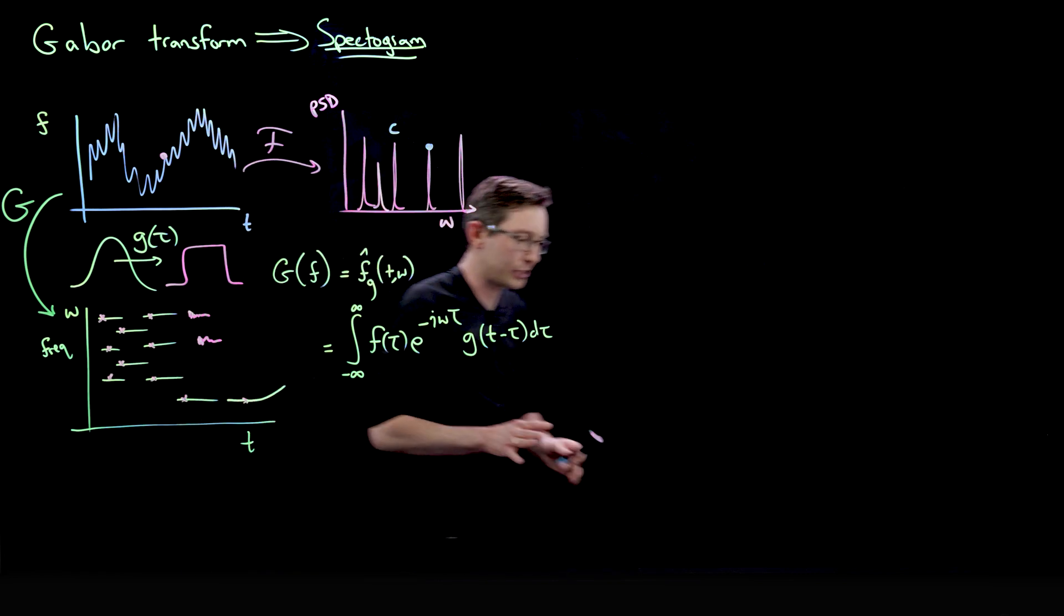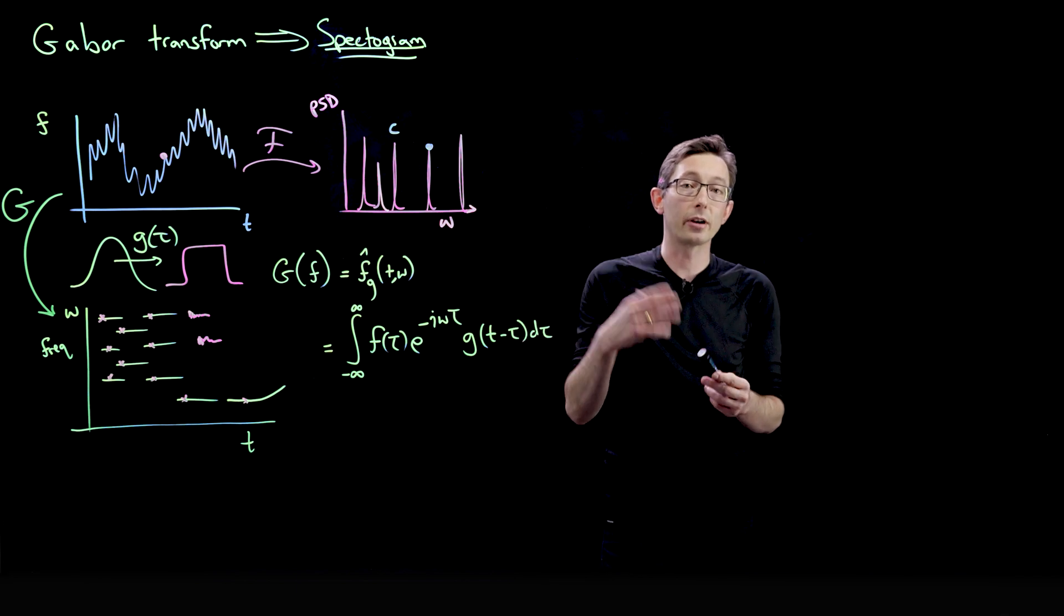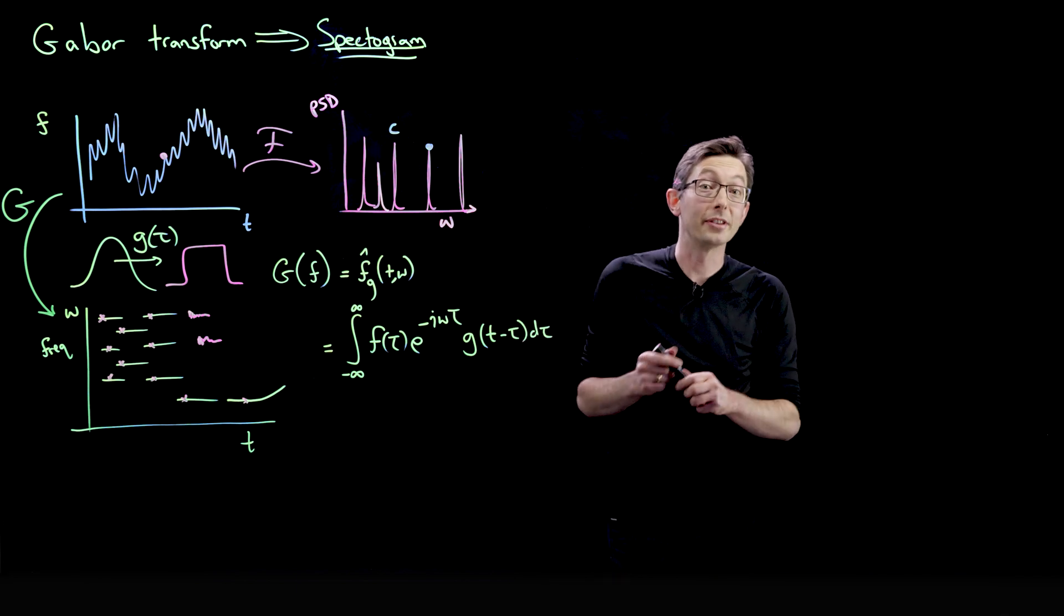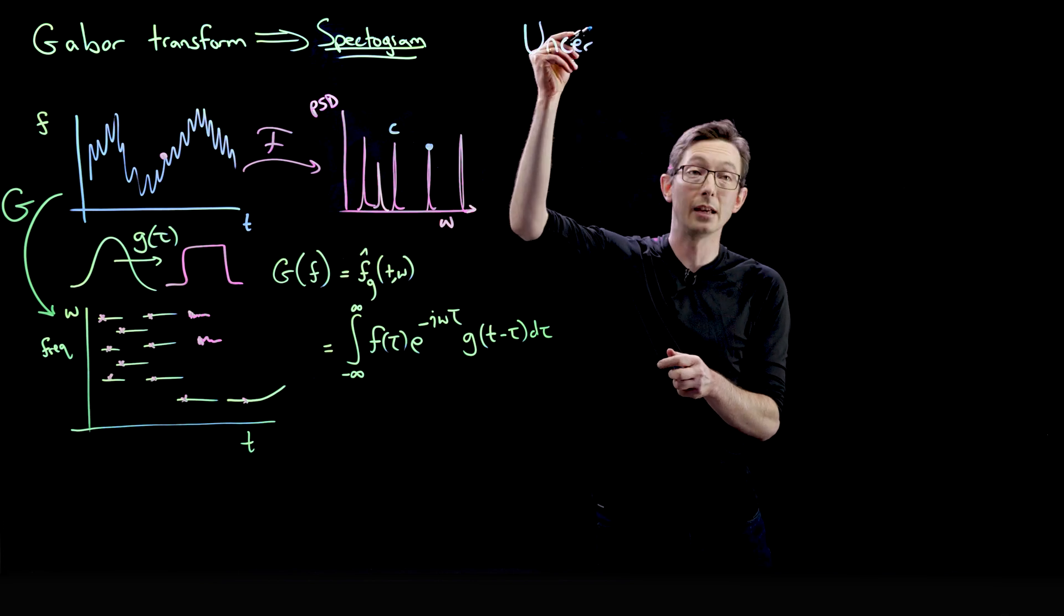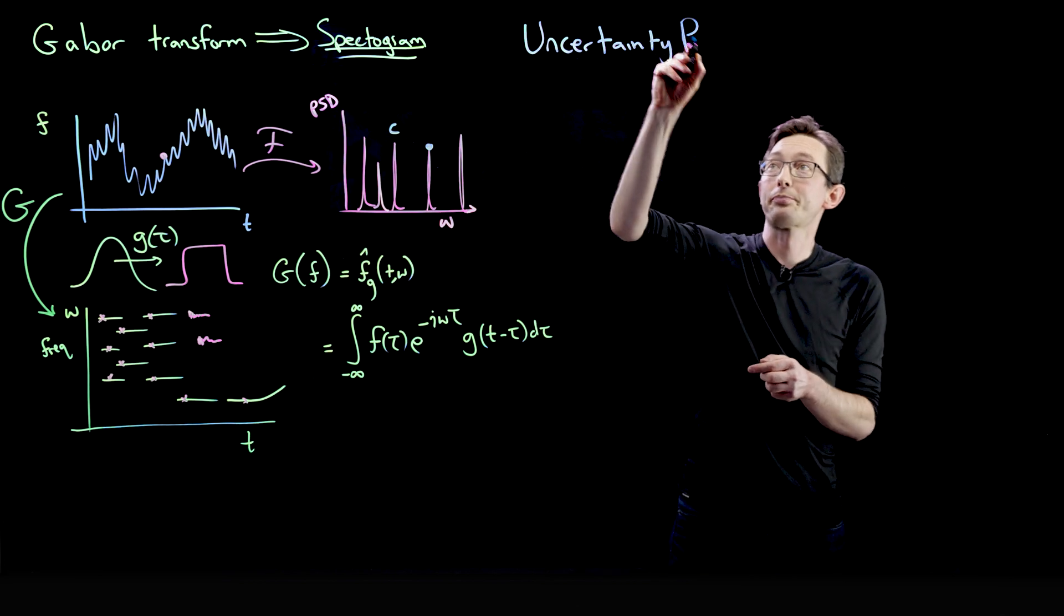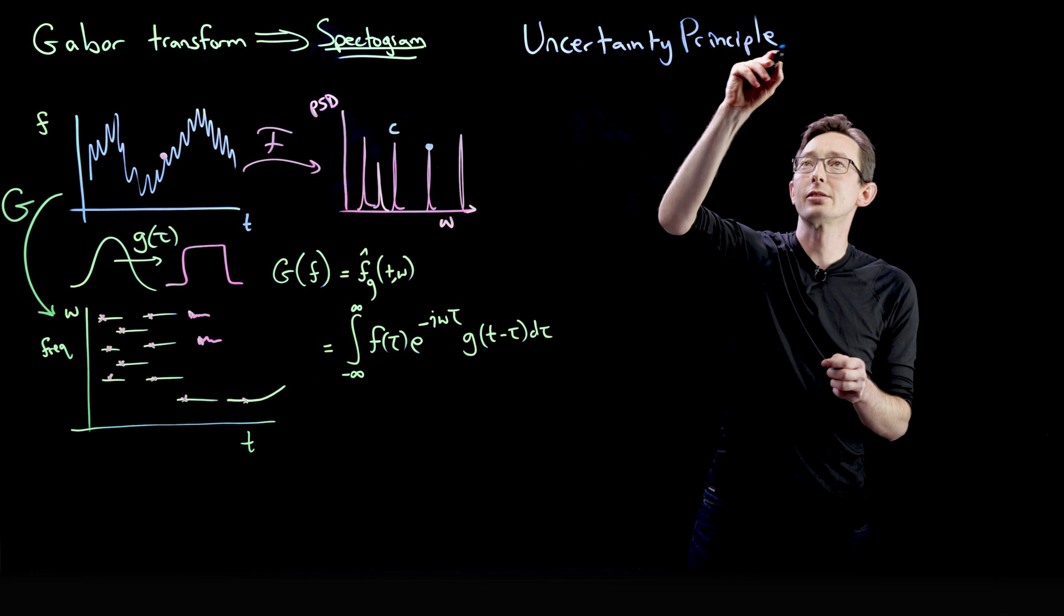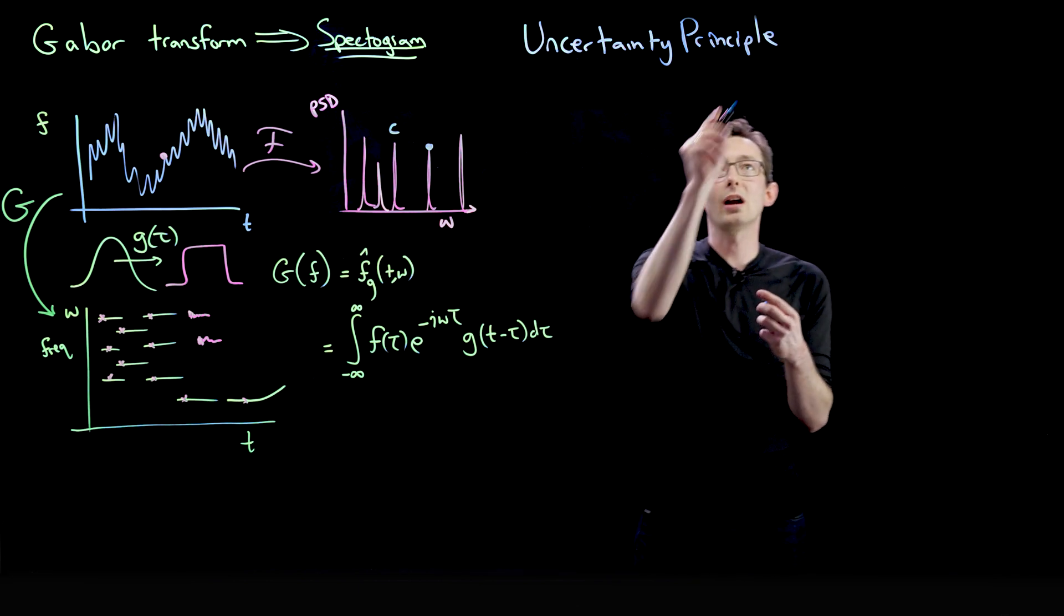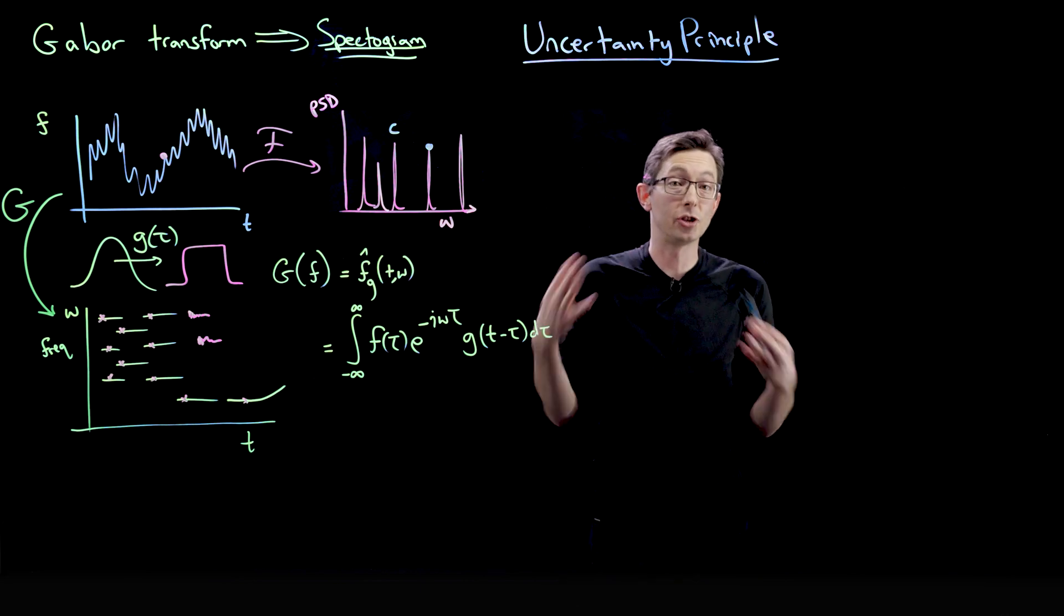And so that's really important. And it actually is related to a fundamental property of Fourier transform pairs called the uncertainty principle. So you've probably seen this before, for example, in quantum mechanics, the uncertainty principle. And I think it's really interesting that this uncertainty principle from quantum mechanics actually is a property of Fourier transform pairs in general.